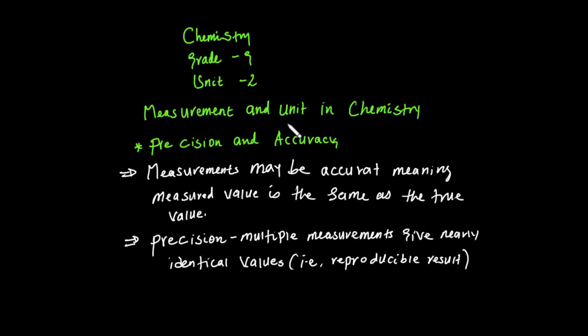The other point from the previous lesson was uncertainty in measurement. Whenever we measure something, there is always some uncertainty. There are two types: systematic uncertainty and random uncertainty. With systematic uncertainty, the values are not consistent — they may be too large or too small. Systematic uncertainty or systematic error can be eliminated if you know where the problem is.